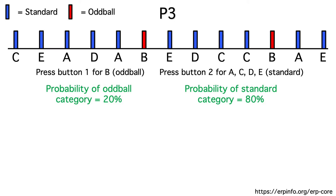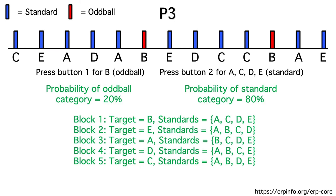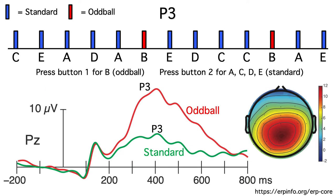This is how the P3 task in the ERP core works, except that B wasn't always the target letter. A different letter was defined as the oddball for each block of trials. As you can see, the oddball generated a larger P3 than the standards, because the probability of the standard category was 80%, even though each individual standard letter had a probability of 20%.